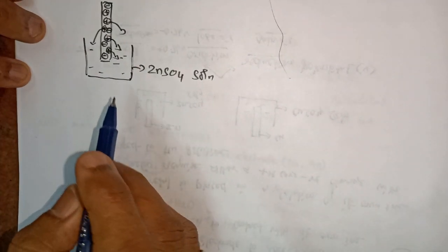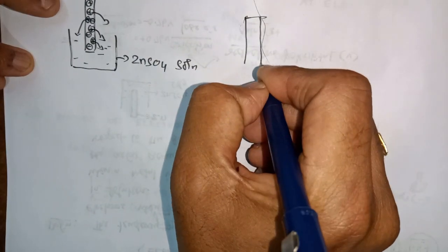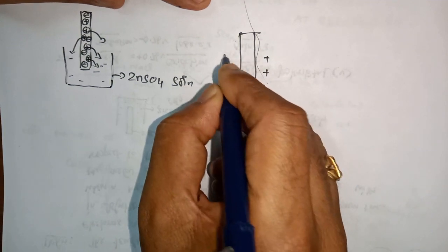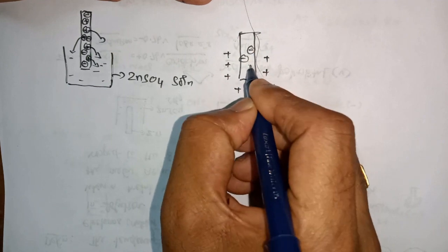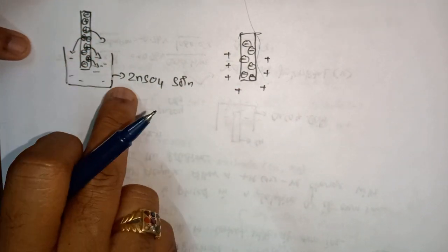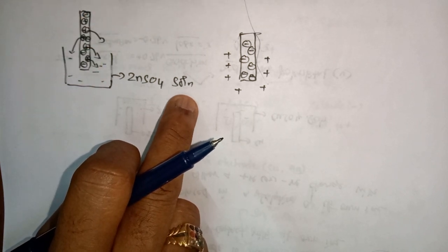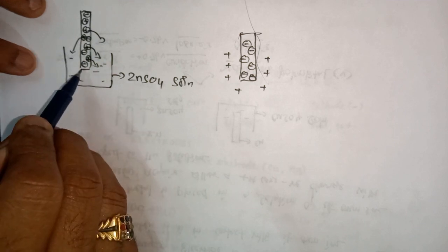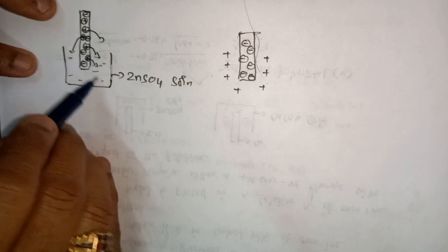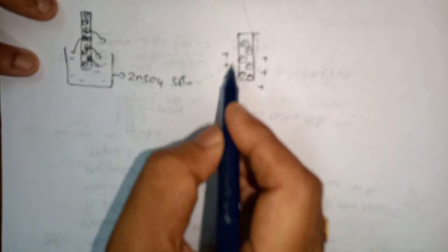The zinc metal ions will start to come out from the metal surface. Some of the zinc metal ions from the surface come out as Zn²⁺ ions, and the electrons are left behind on the rod itself. After the positive zinc ions come out into the solution, the electrons remain on the rod.